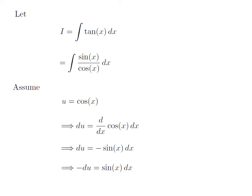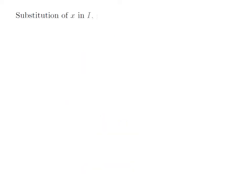Taking minus to the left, we get minus of differential of u is equal to sine of x into differential of x. Substituting sine of x times differential of x with minus differential of u, and cosine of x with u, we get i is equal to the integration of minus 1 divided by u with respect to u.